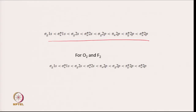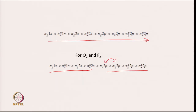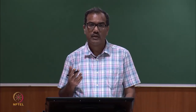The energy ordering from lowest to highest is: σ_g1s, σ_u*1s, σ_g2s, σ_u*2s, and then higher orbitals. The only difference comes in O₂ and F₂, where the ordering of σ_g2p and π_u2p is reversed compared to lighter homonuclear diatomics. This molecular orbital picture describes the energies of different molecular orbitals for homonuclear diatomic molecules.